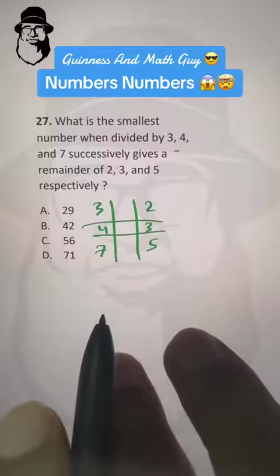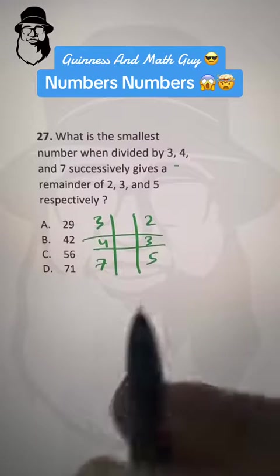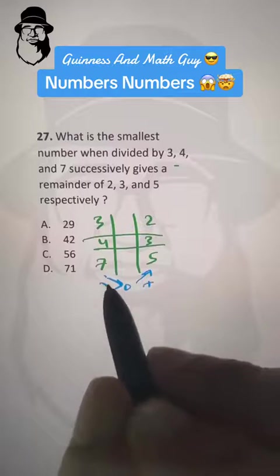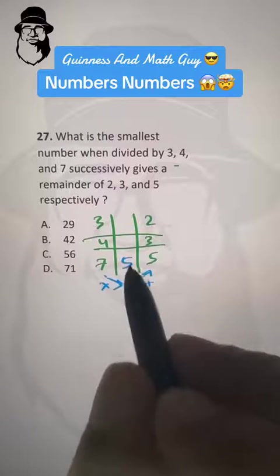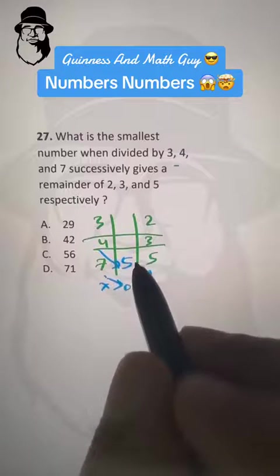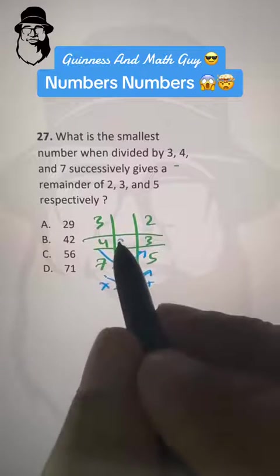So we need the smallest one, so we will start with 0. 7 times 0 is 0, and then plus 5 is 5. Again, 4 times 5 is 20, plus 3 is 23.